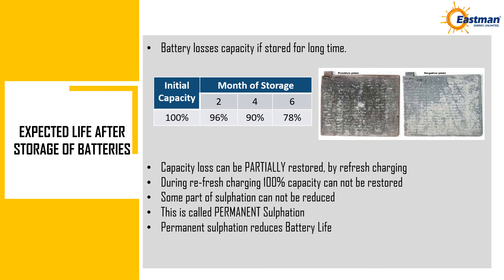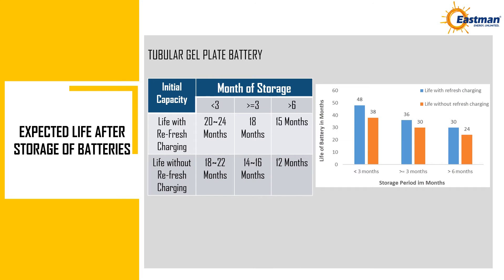Expected life after storage of batteries. A battery loses capacity if stored for a long time. Capacity loss can be partially restored by refresh charging, but during refresh charging, 100% capacity cannot be restored. Some part of the sulfation cannot be reduced — this is called permanent sulfation. Permanent sulfation reduces battery life.